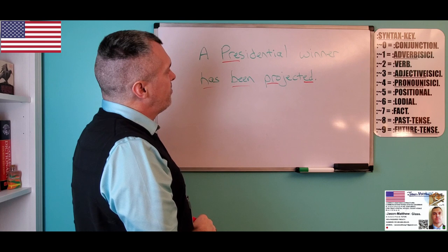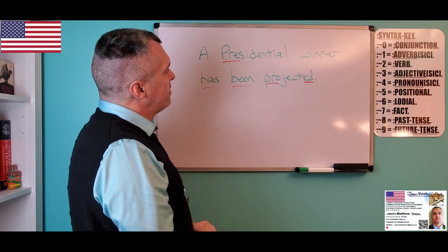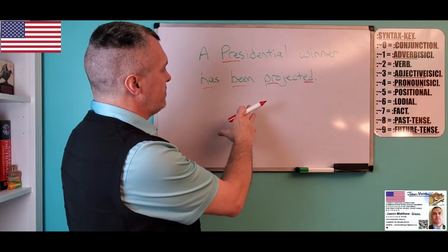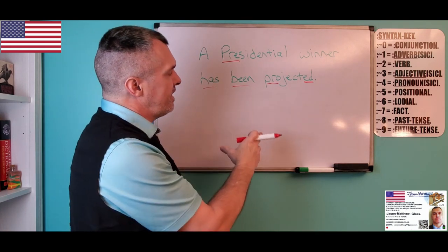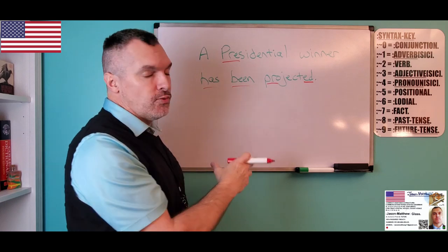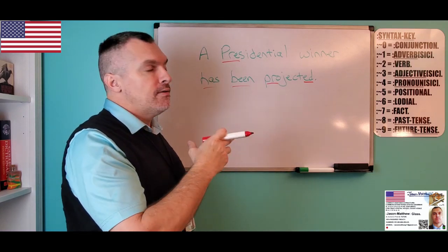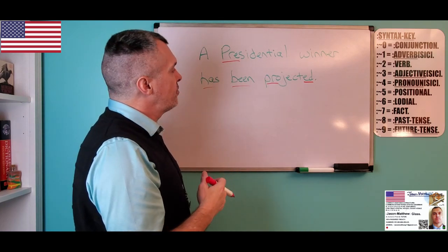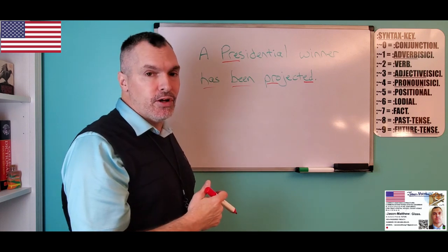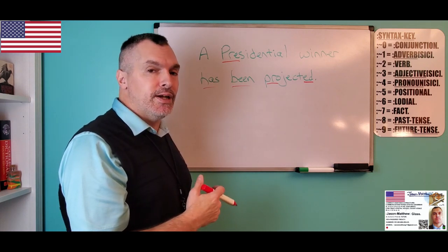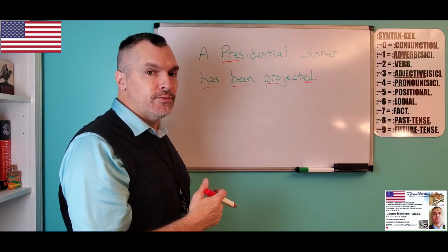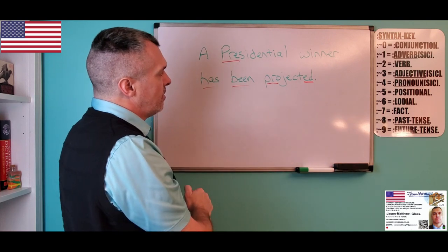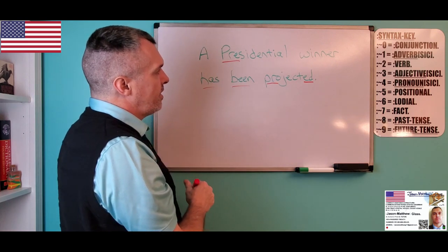Right off the bat, when you look at these words, you would say that the tangible contract words will be verbs, adjectives, or pronouns. And the non-tangible contract words will be adverbs, verbs, or pronouns. And you look at the syntax key over there.